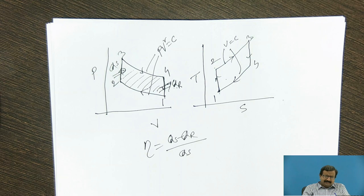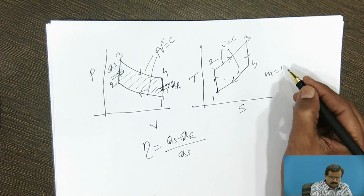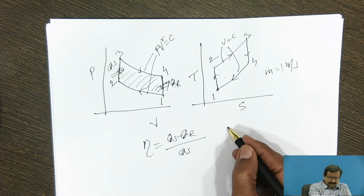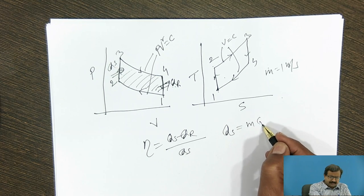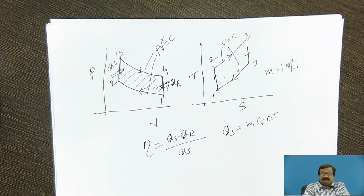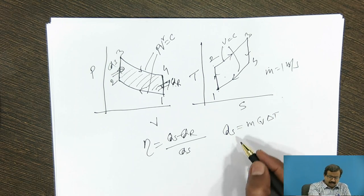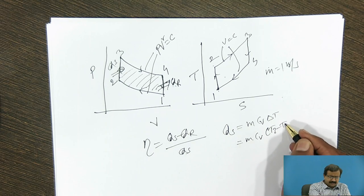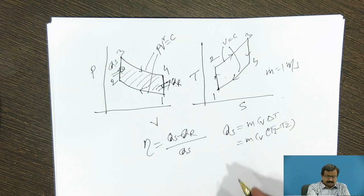Since this is an air standard cycle analysis done per kilogram (m = 1 kg or m-dot = 1 kg/s), for a constant volume process, heat supplied equals m·Cv·ΔT. This is from thermodynamics. For our cycle, ΔT is T3 minus T2 for the heat addition process.